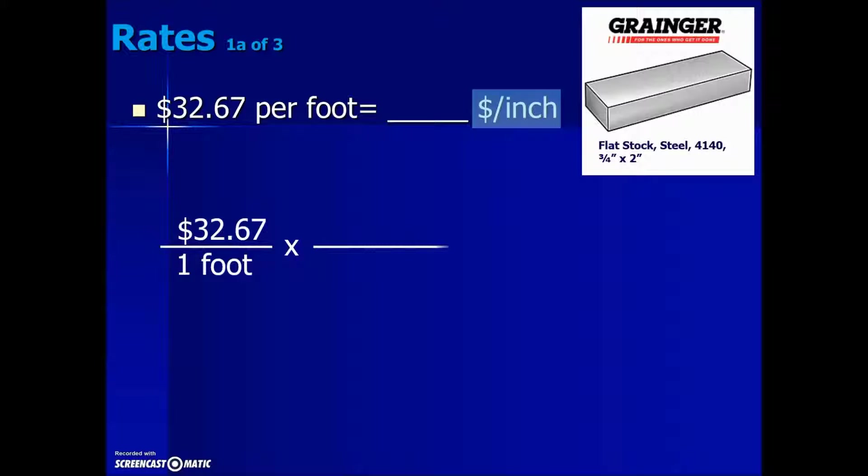In our conversion factor, we will want to put the foot this time in the numerator so that it cancels out the unit in the denominator. One foot is equivalent to 12 inches, expressing this conversion factor fraction so that we accomplish the canceling out of feet. We put the one foot in the numerator, which cancels out the foot or feet measurement, leaving us with money in the numerator per inch in the denominator.